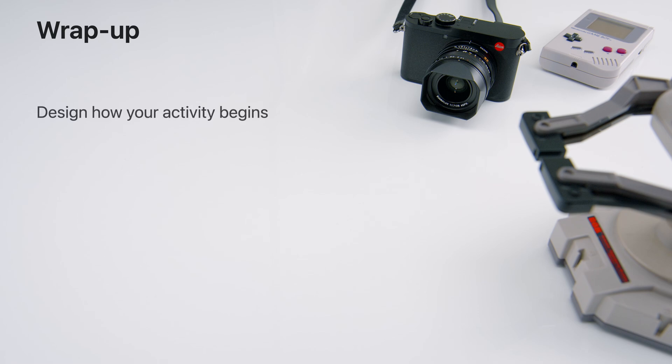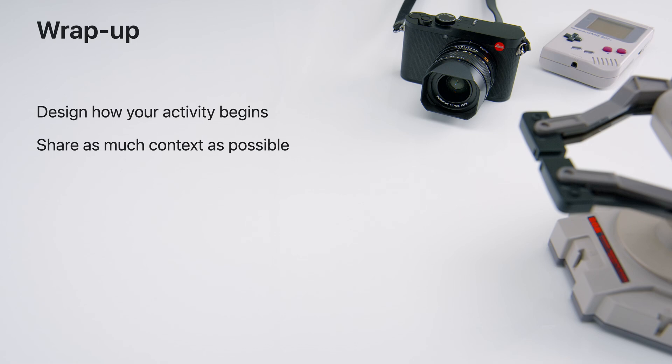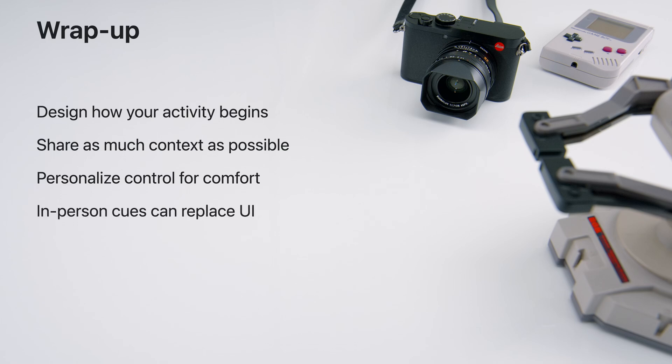In summary: design how your activity begins for everyone. While the system provides a stable coordinate system for all participants, your app is also responsible for sharing as much context as possible. Depending on how complex your app interactions are, personalized control can be necessary for comfort and accessibility. In-person nonverbal cues can take the place of state change notifications in your UI. Designing a great shared spatial experience often comes down to knowing when and how to diverge from shared context. Apps on this platform really shine when they can be enjoyed with others — we encourage you to build your app with these social experiences in mind. Thanks for watching.